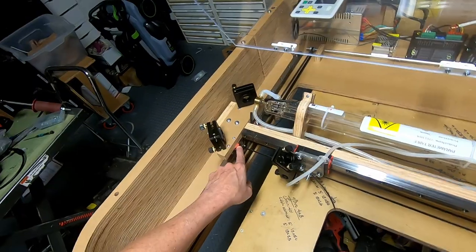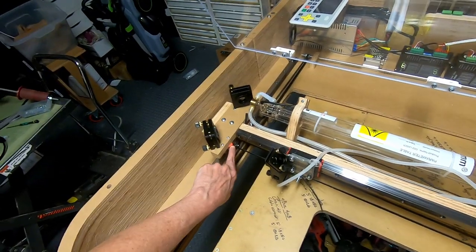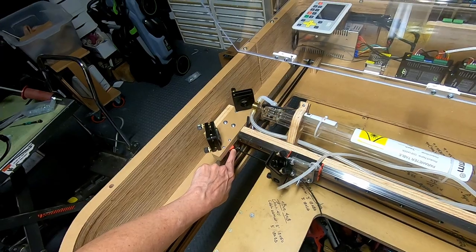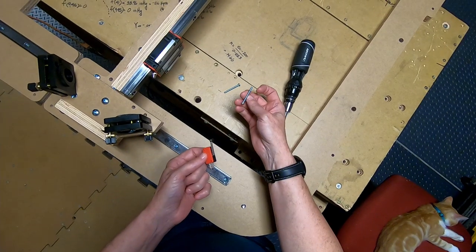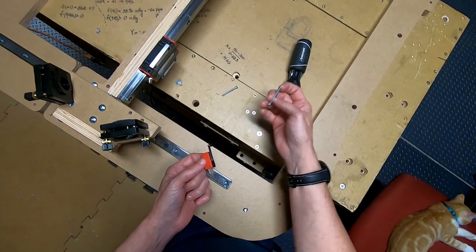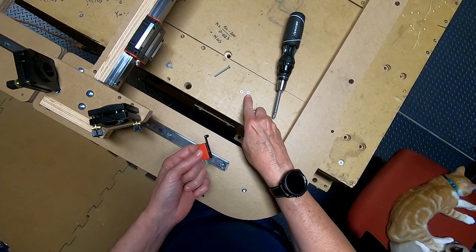In this step, the limit switch for the Y axis will be installed. You'll need the limit switch, two number six one and a half inch screws, and two number six nuts.